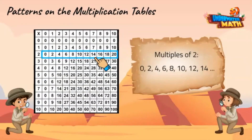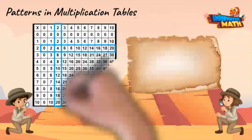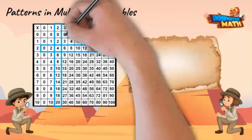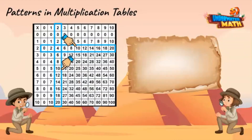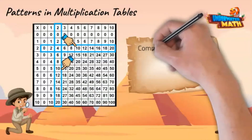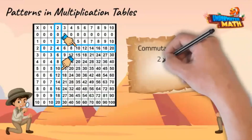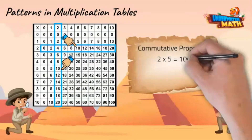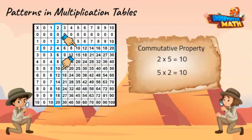Let's find another pattern. Look at the row and column highlighted in blue next to the two and beneath the two. When you change the order of the factors, you still get the same product. That's the commutative property. Two times five is ten, and five times two is ten. That's right.